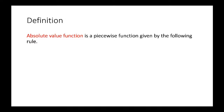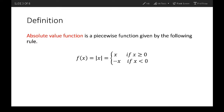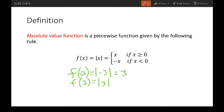Definition: an absolute value function is a piecewise function given by the following rule: f of x equals absolute value of x. If you plugged in negative 3 to an absolute value, you're going to get positive 3. If you plug in a positive 3, your output is still going to be 3. Notice how two different situations still give you the same outcome.